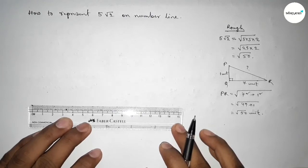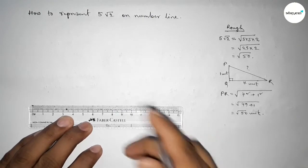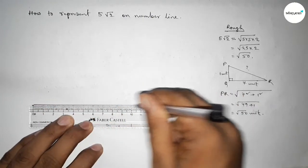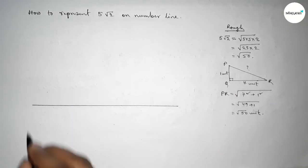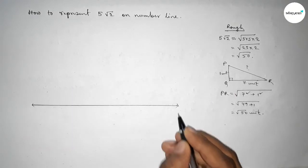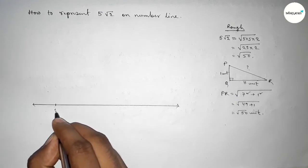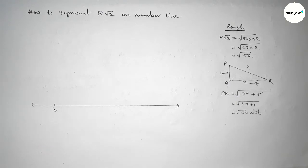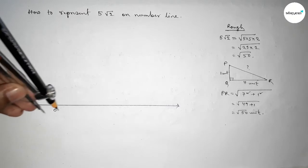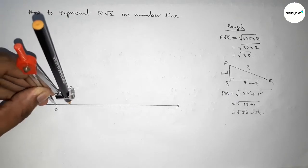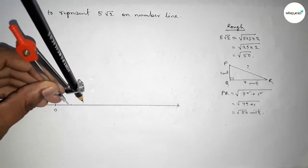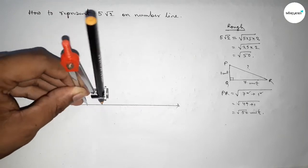First of all we have to make a number line. First drawing here a line of any length and taking arrow mark on both side. Now taking here a starting number 0. Now using compass to mark the numbers on the line, so taking any length and marking the numbers on the line by using compass.